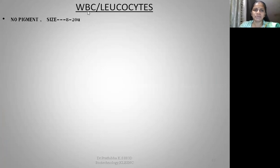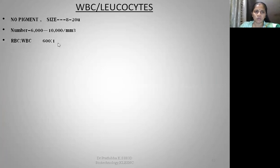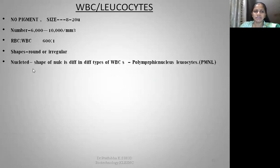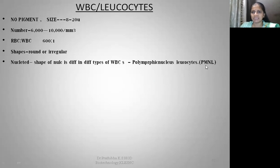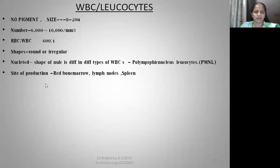WBCs vary in size from 8 to 20 microns, and their number is 6,000 to 10,000 per mm³. The RBC to WBC ratio is 600 to 1 — for every 600 RBCs there is one WBC. WBC concentration becomes very high during infection or allergies. The shape of WBCs may be round or irregular, and their nucleus shape varies between different types of WBCs, which is why they are called polymorphic nucleus leukocytes — 'poly' meaning many, 'morphic' referring to morphology.